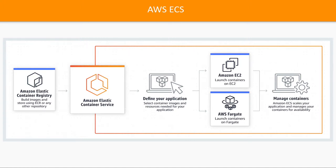We define our application through the AWS console — specifying the type of containers, the runtime engine, and the base image. You can get the base image from ECR, Elastic Container Registry. Then you manage the container through the Elastic Container Service provided by AWS.